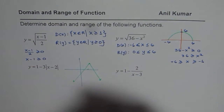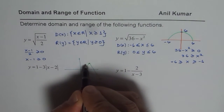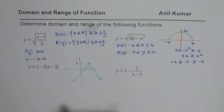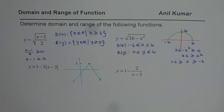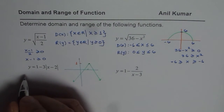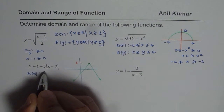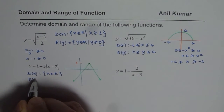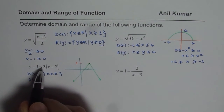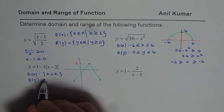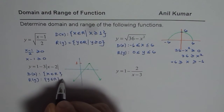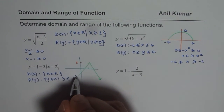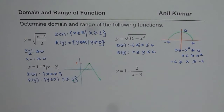The important thing to note is that the vertex is at y equals 1. For absolute functions, the domain is not restricted at all — domain is all real numbers, so we write x belongs to real numbers. As for the range, since it is reflected on the x-axis, it is y belongs to real numbers where y is less than or equal to 1.